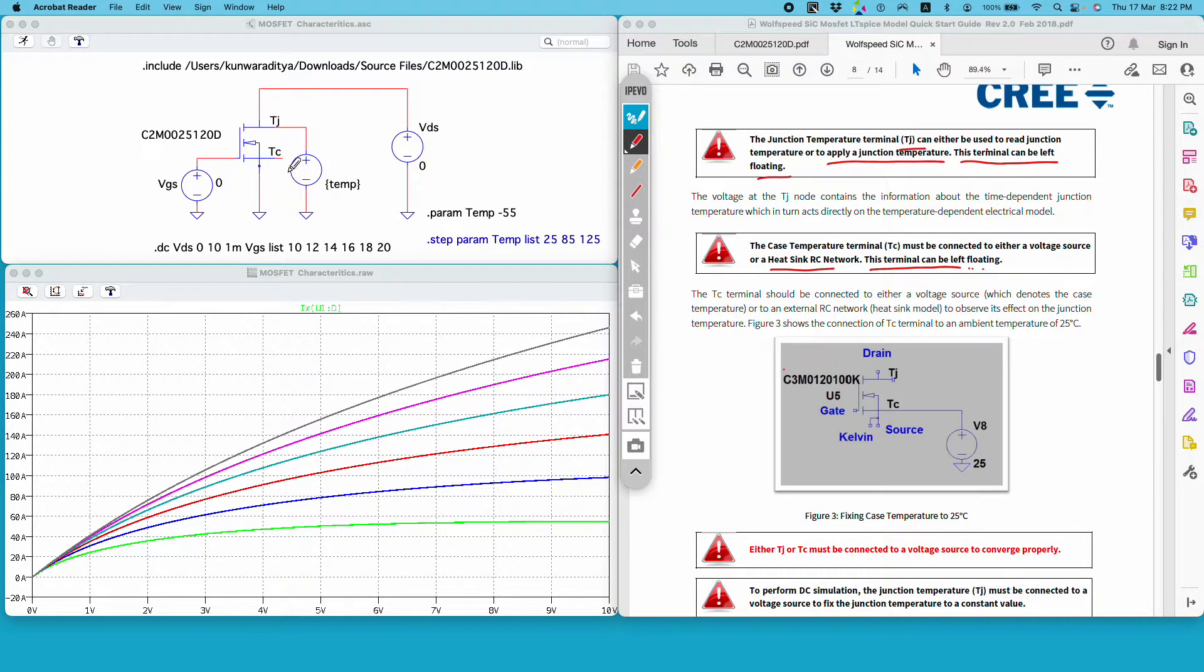So if you do not connect it to a voltage source or some kind of RC network you will not get any error. So this is very useful and I hope you get the idea how to use the MOSFET model from Wolf Speed.